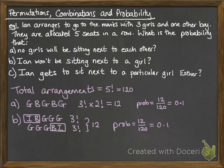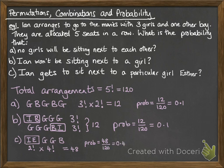For the third one — Ian gets to sit next to Esther — we put Ian and Esther in a group together. Ian and Esther can be arranged in two factorial ways because they could be swapped over. Then we have four items in total: the Ian-and-Esther block, the other girl, another girl, and the boy, arranged in four factorial ways. That comes to 48, so our probability is 48 out of 120, which is 0.4.